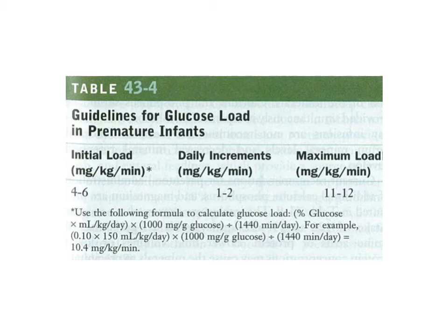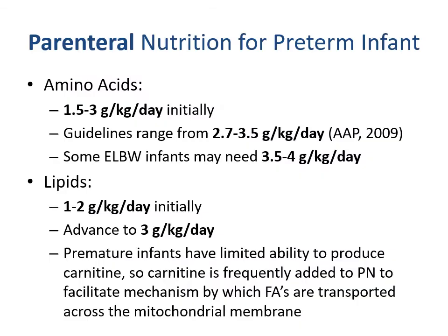The glucose infusion rate — also called glucose oxidation rate or glucose load — for premature infants differs from adults. Recall the maximum for adults was 5 milligrams per kilogram per minute. For premature infants, the initial rate is 4 to 6 milligrams per kilogram per minute, with a daily increase of 1 to 2, and a maximum of 11 to 12 milligrams per kilogram per minute.